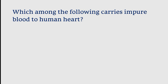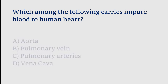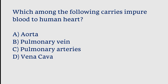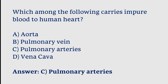Which among the following carries impure blood to the human heart? Options: aorta, pulmonary vein, pulmonary arteries, vena cava. The correct answer is option C. Pulmonary arteries carry impure blood to the human heart.